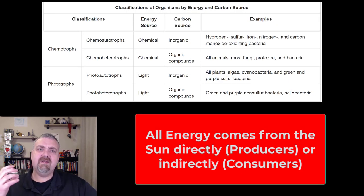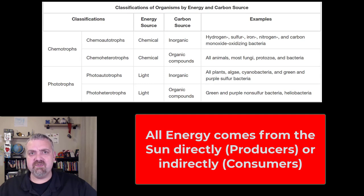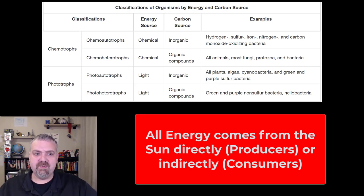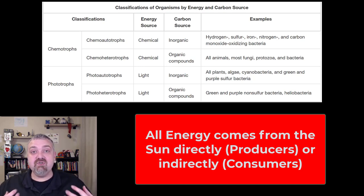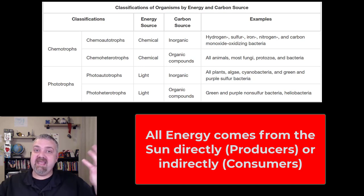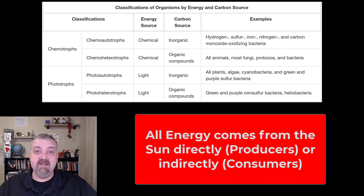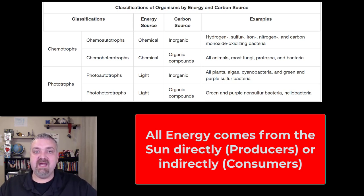As far as ways to classify organisms using terminology — first we have producers and consumers. Producers get their energy from the sun; they can make their own energy. Consumers have to consume their energy — we can't get it directly from the sun, though all energy does ultimately come from the sun. You and me, and the bacteria we care about, are consumers.